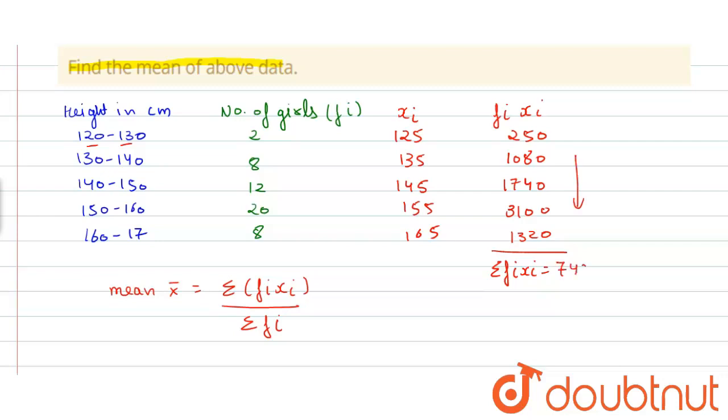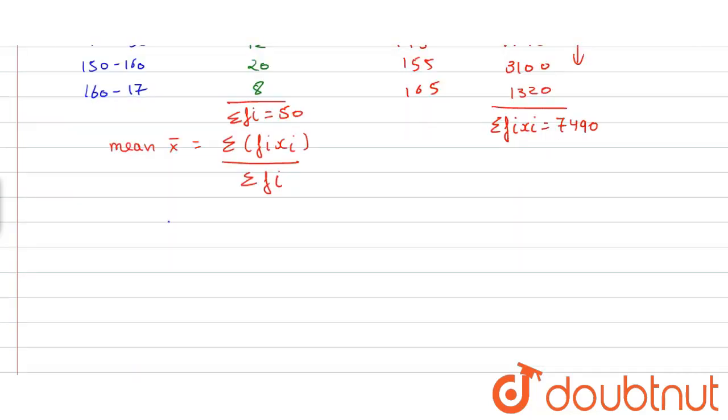So the total Σfixi is equal to the sum of all these which is equal to 7490, and Σfi is equal to sum of all these which is equal to 50. So by putting values we get mean is equal to 7490 upon 50. By further solving this we get 149.8 which is our answer.